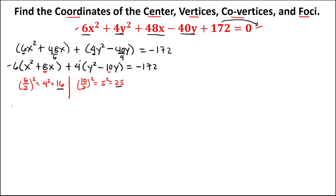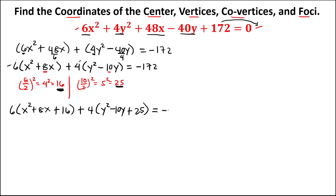We add these values to the equation: 6(x² + 8x + 16) plus 4(y² − 10y + 25) equals negative 172. Since we added inside the parentheses, we must also add to the right side, multiplied by the outside numbers: plus 6×16 and plus 4×25.